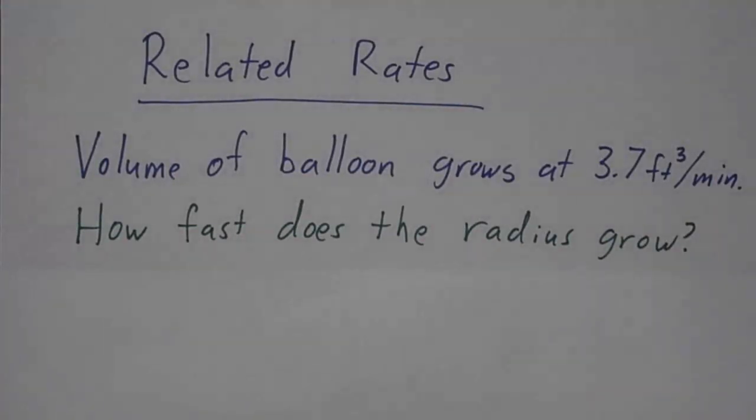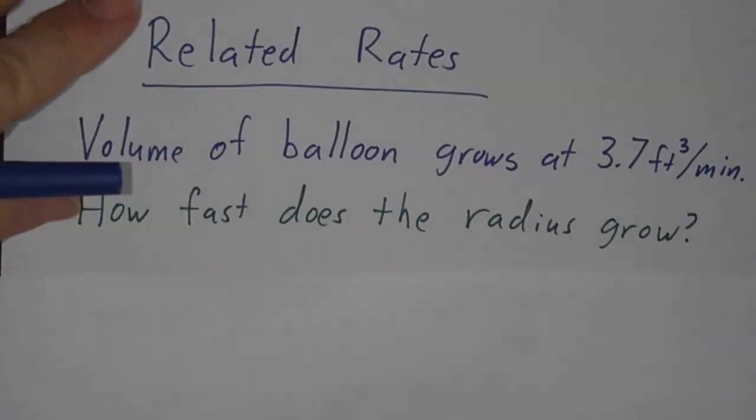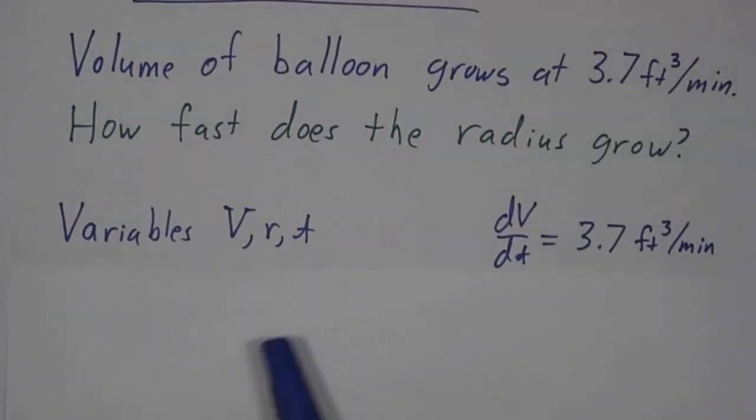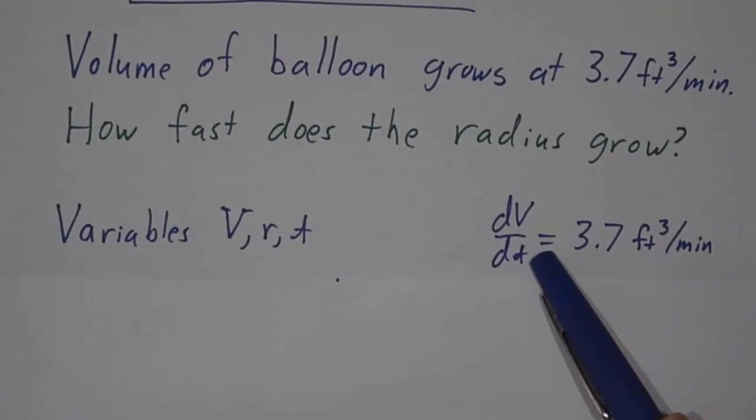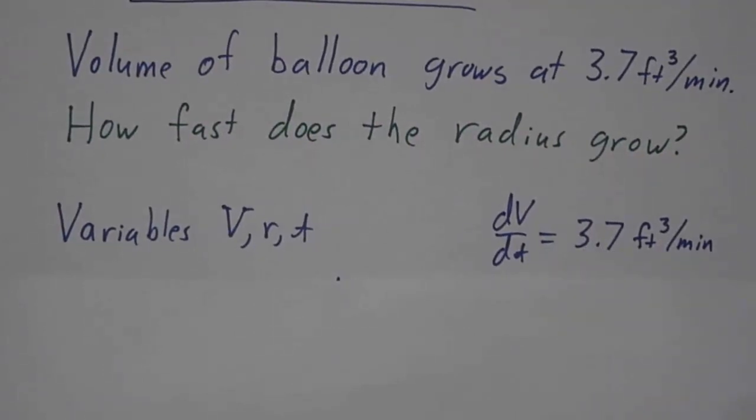For example, let's suppose I'm blowing up a balloon and I'm pumping in air at 3.7 cubic feet per minute. How fast does the radius of the balloon grow? Here our three variables are the volume, the radius, and time. And we're told that dv/dt, the rate at which we're pumping air into the balloon, is 3.7 cubic feet per minute.